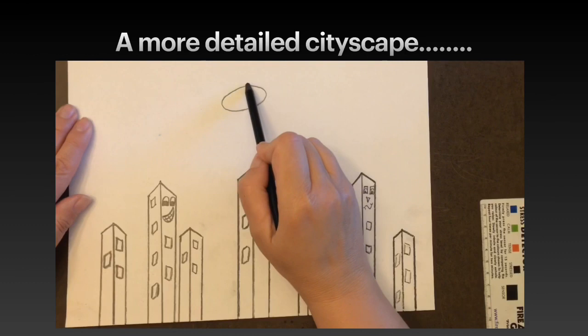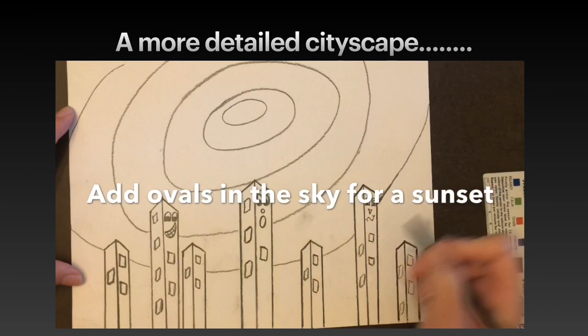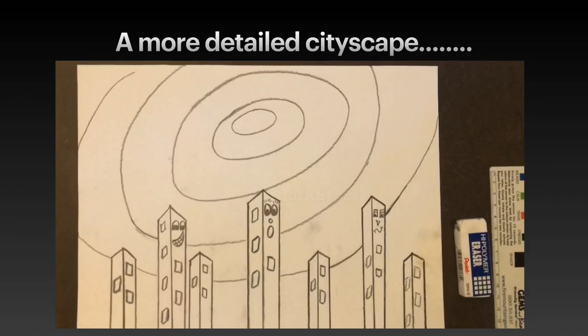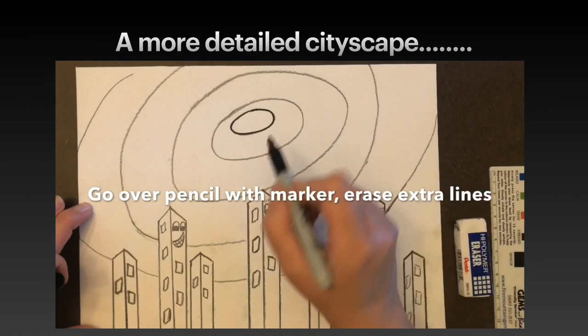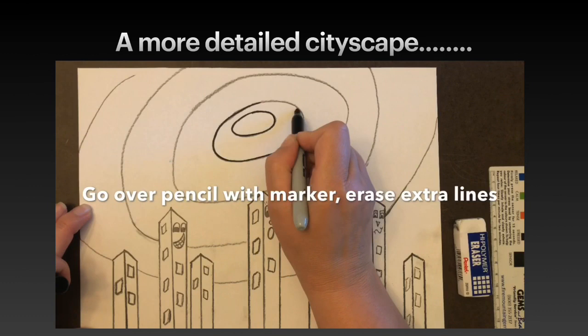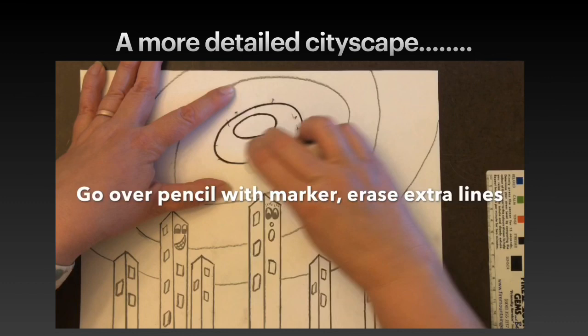Add your ovals in the sky for a sunset — you could also do a spiral. Go over the pencil with a marker and erase any extra lines. Continue doing that for the whole sunset and all of the buildings.